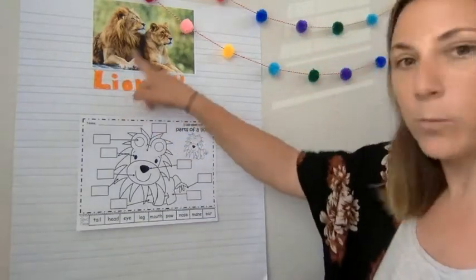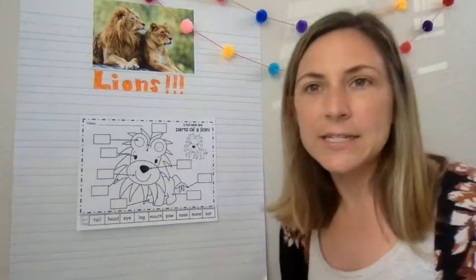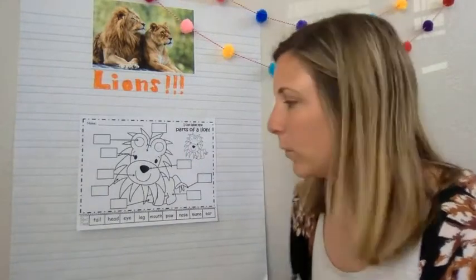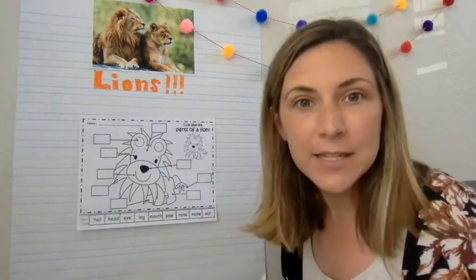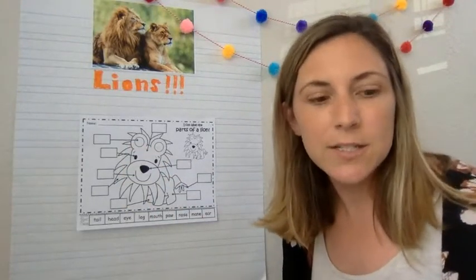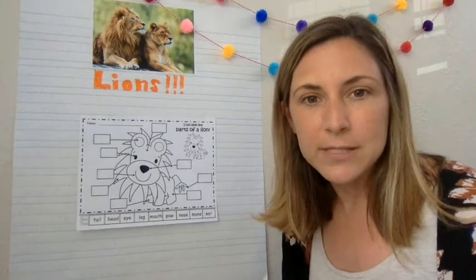I have some real lions up here so you can see what they look like. My title, lions, and then we will cut out all of our pieces and put them in the right spots as we go. So you will need scissors and glue to get your labels down.